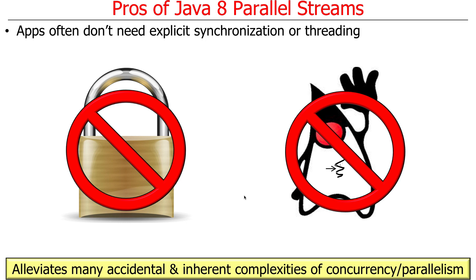Apps that use parallel streams often don't need any explicit synchronization — you don't often need to have locks in them at all, or if you do they'll be minimal, like in your concurrent collector. There will also be no explicit threading and no explicit calls to the fork-join pool. All that stuff is pushed down, which helps to alleviate various inherent and accidental complexities of concurrency and parallelism.